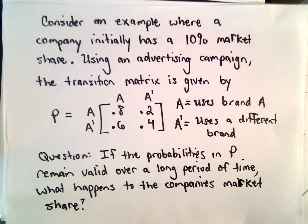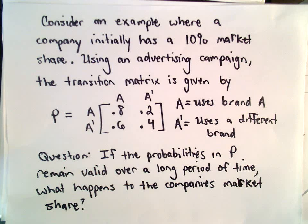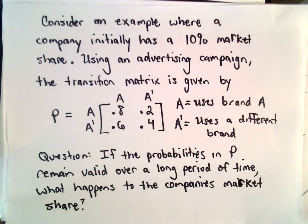If these probabilities in our transition matrix remain valid over a long period of time, what's going to happen to the company's market share? Are they eventually going to get the whole market? Will it kind of oscillate between values? Or maybe it'll actually sort of level off at some particular share.